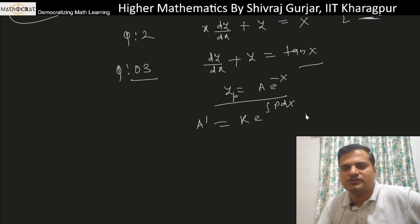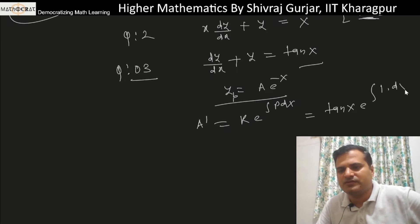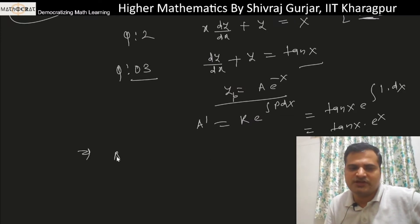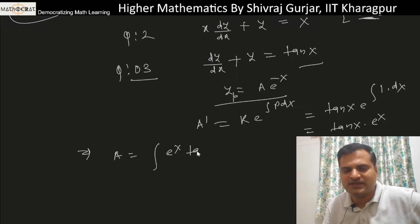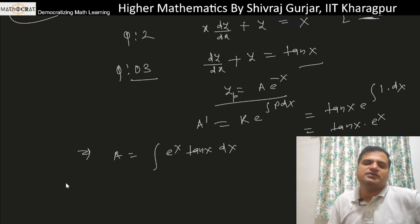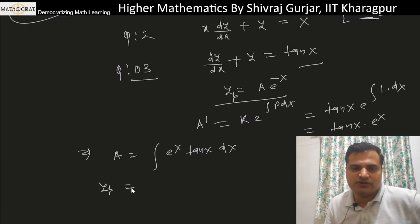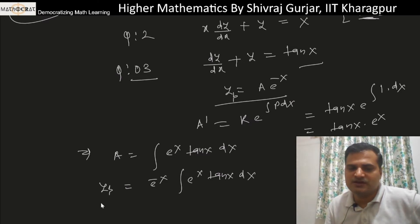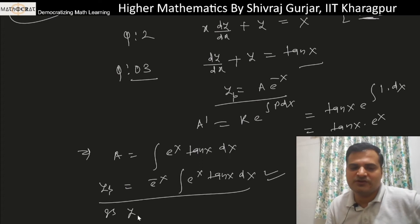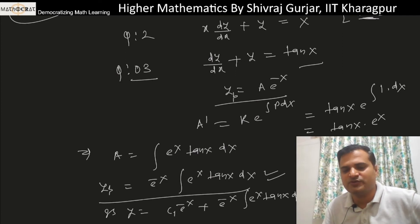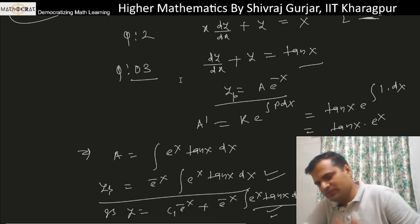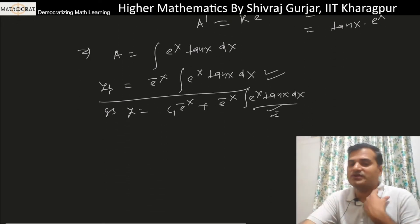Here P = 1, so e^(∫P dx) = e^x. Therefore da/dx = R·e^(∫P dx) = tan x · e^x. So a = ∫e^x · tan x dx. The particular integral is y_p = e^(−x) · ∫e^x · tan x dx.